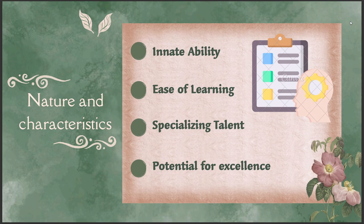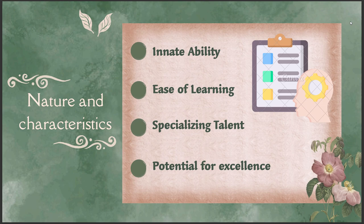That problem-solving ability was Ramanujan's aptitude. Third, specializing talent — aptitude is often specific to certain activities or fields, focusing on particular tasks or areas of interest. AR Rahman's aptitude for music helped him learn and compose amazing tunes more easily than others. Fourth, potential for excellence — an aptitude for something means there is always a potential to excel in that area, often beyond average levels of skill and competence. A great example here is Usain Bolt, whose aptitude for athletics made him the world champion.